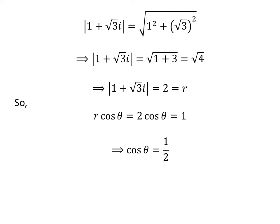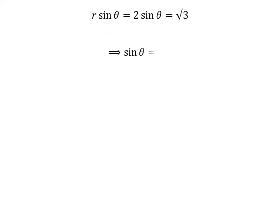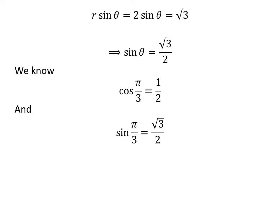Since r times cosine of theta is equal to 1, cosine of theta is equal to one half. Similarly, sine of theta is equal to square root of 3 upon 2. We know cosine of pi upon 3 is one half and sine of pi upon 3 is square root of 3 upon 2.